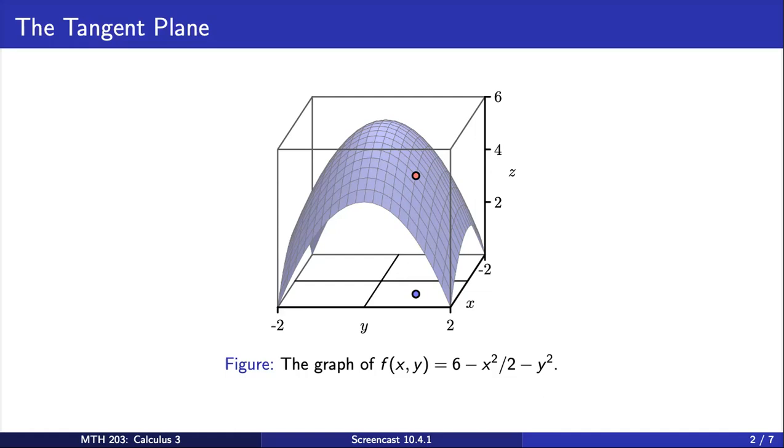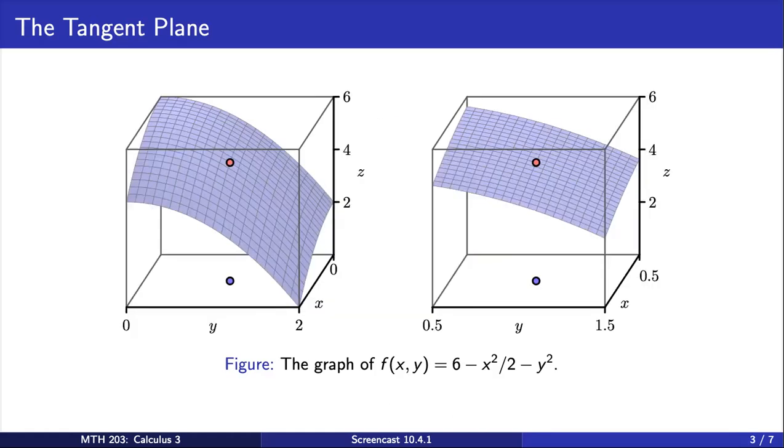Let's see what happens when we look at the graph of a two-variable function on a small scale. Consider the graph of this function f shown here. We are going to see what happens when we zoom in on the highlighted point where x equals 1 and y equals 1. Just as the graph of a differentiable single variable function looks like a line when viewed on a small scale, we see that the graph of this particular two-variable function looks like a plane as we zoom further and further in.